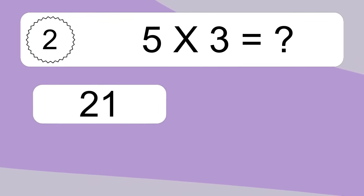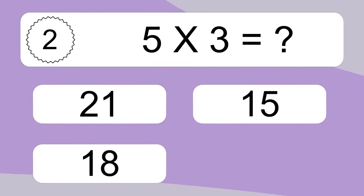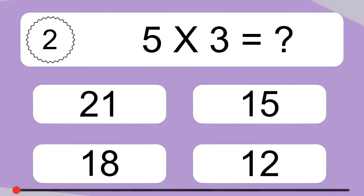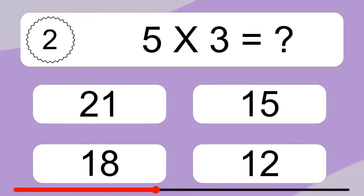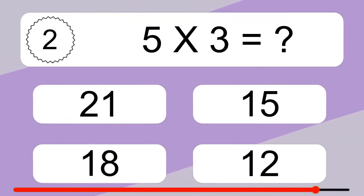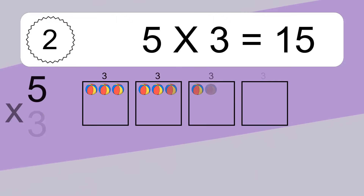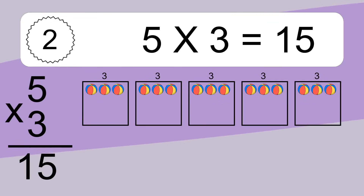5 times 3 equals what? 5 times 3 equals 15.